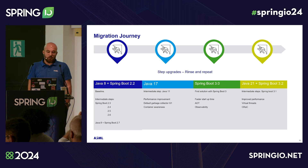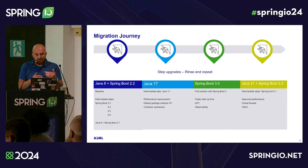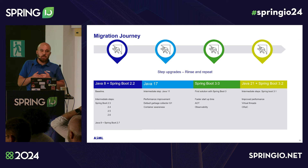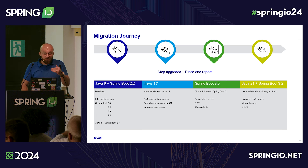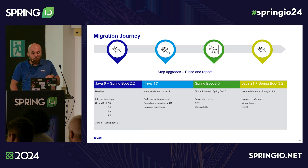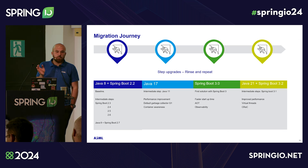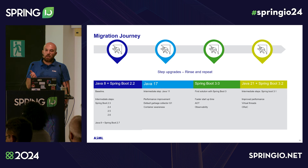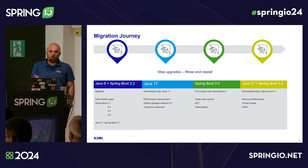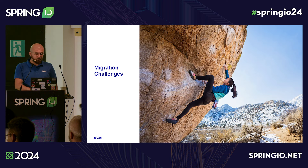With Spring Boot 3 and Java 17 we achieved faster startup time. For some long-running services we enabled AOT, which reduced startup time further. We also leveraged the observability improvements, which I'll discuss in relation to distributed tracing. Moving to Java 21 was a smooth ride — we had to update Lombok and some testing libraries, and that was it. Similarly for Spring Boot 3.2.